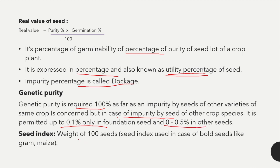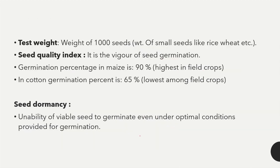The next term is seed index — the weight of 100 seeds. Seed index is used in case of bold seeds like gram and maize. Next is test weight — the weight of 1000 seeds. Test weight hum small seeds ke liye count karte hain aur seed index hum large seeds aur bold seeds ke liye count karte hain.